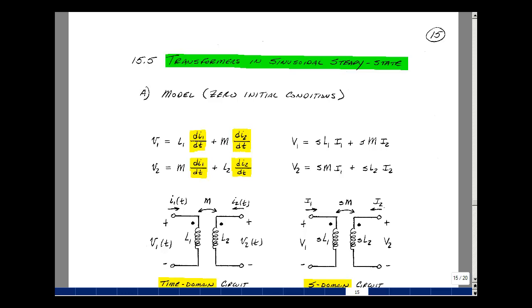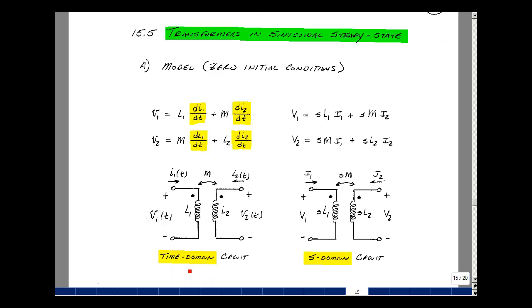Let's take our time domain transformer, which is shown here, with V1 and V2 and I1 and I2, and a mutual inductance M. And we had these equations previously, that V1 is equal to L1 dI1/dt plus M dI2/dt.